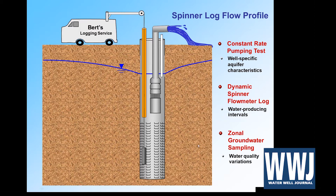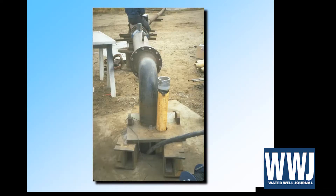For example, we might have a well with a little bit of high nitrate in the upper part of the aquifer. Where do we run a liner or two? We could just guess and maybe not get rid of all the nitrate or even lose too much water production. But here we would know what we're doing ahead of time, and it's not too expensive. Here's how it looks when you set it up: the submersible pump is down the well, we have the electrical cable, the sounding tube in the middle, and the PVC access tube. Pretty straightforward setup.